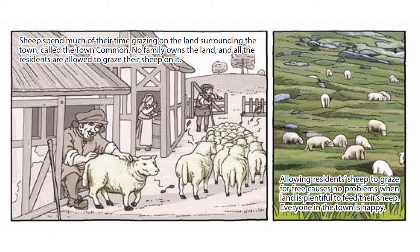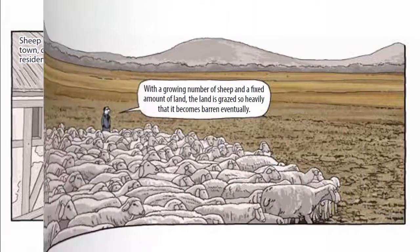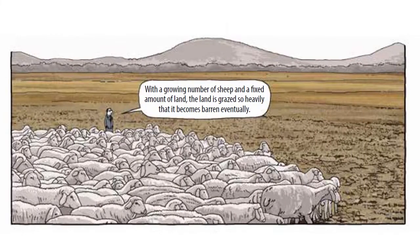No family owns the land, and all the residents are allowed to graze their sheep on it. Allowing resident sheep to graze for free causes no problems when land is plentiful to feed their sheep — everyone in the town is happy. But with a growing number of sheep and a fixed amount of land, the land is grazed so heavily that it becomes barren eventually.